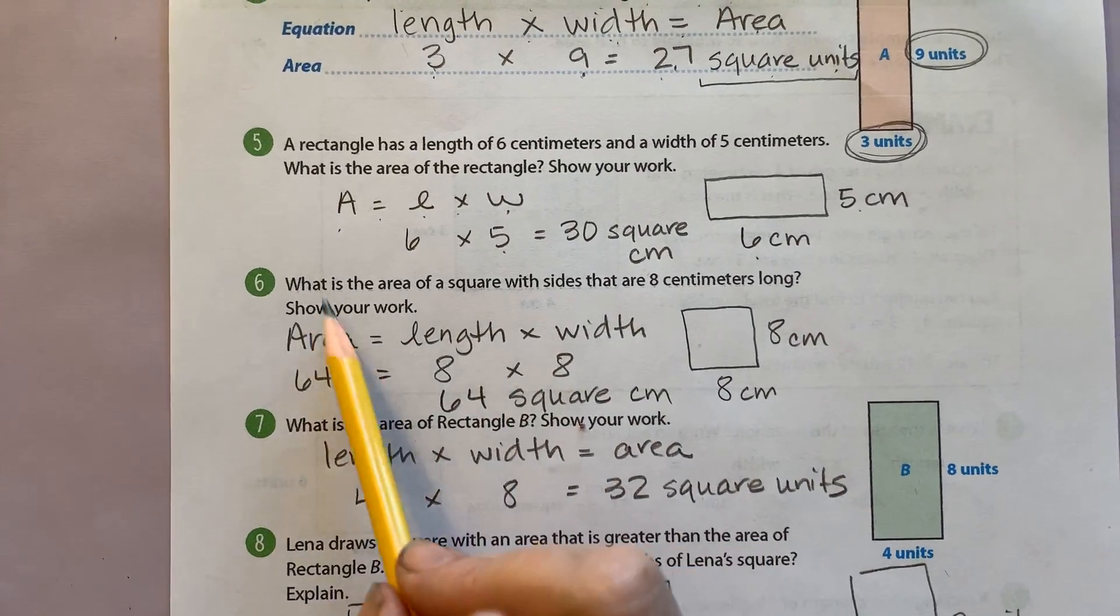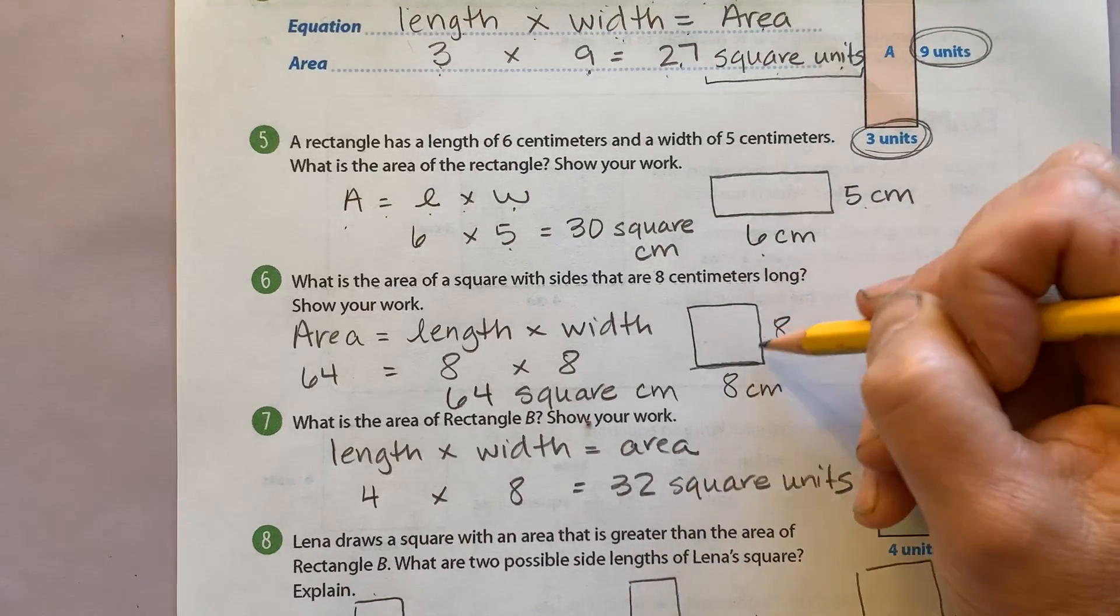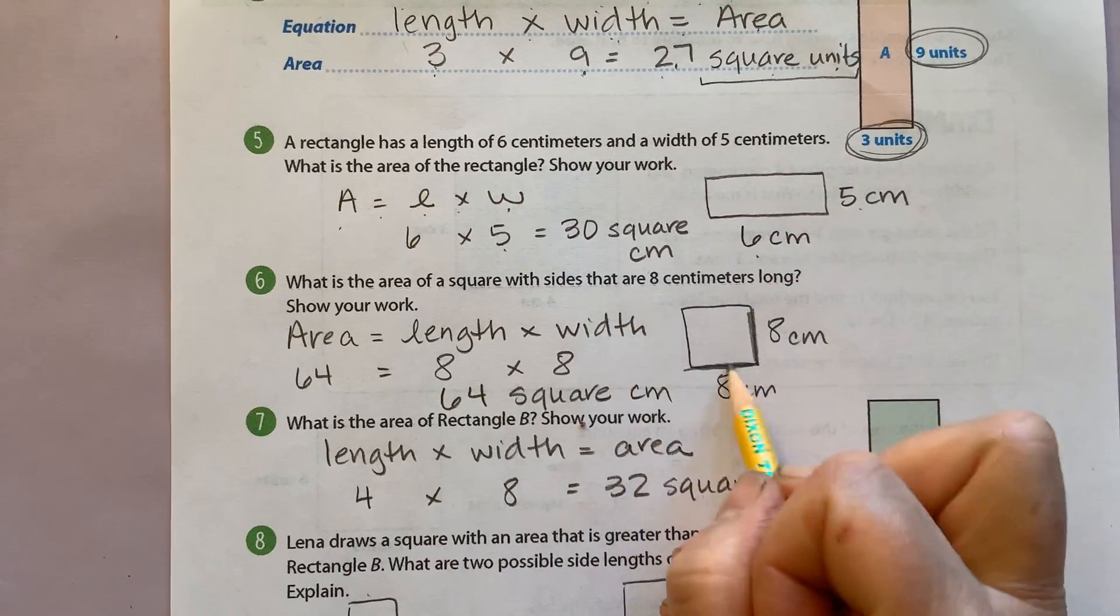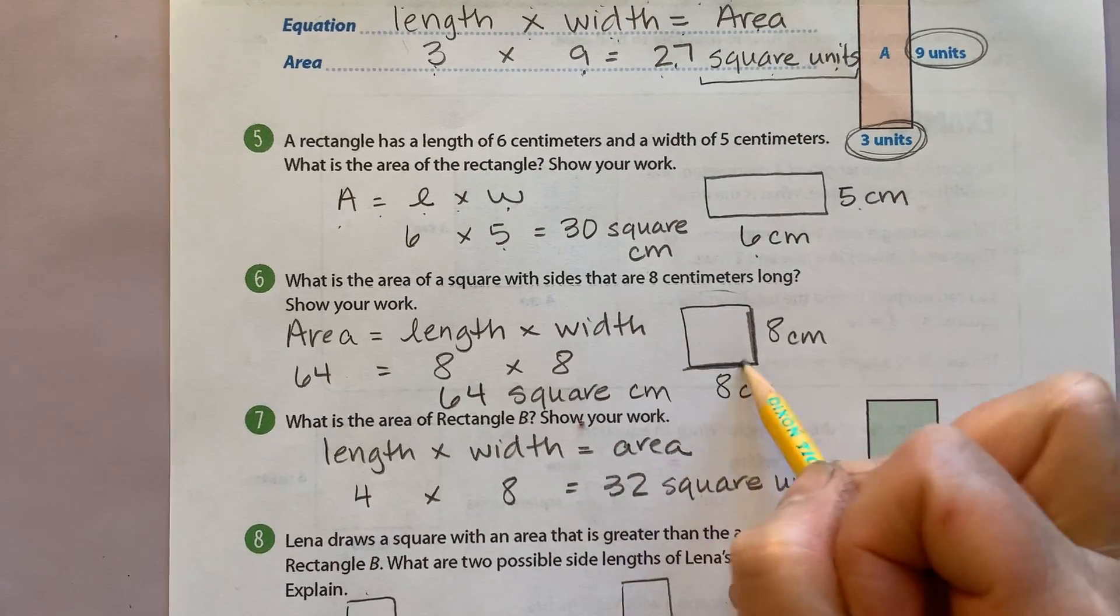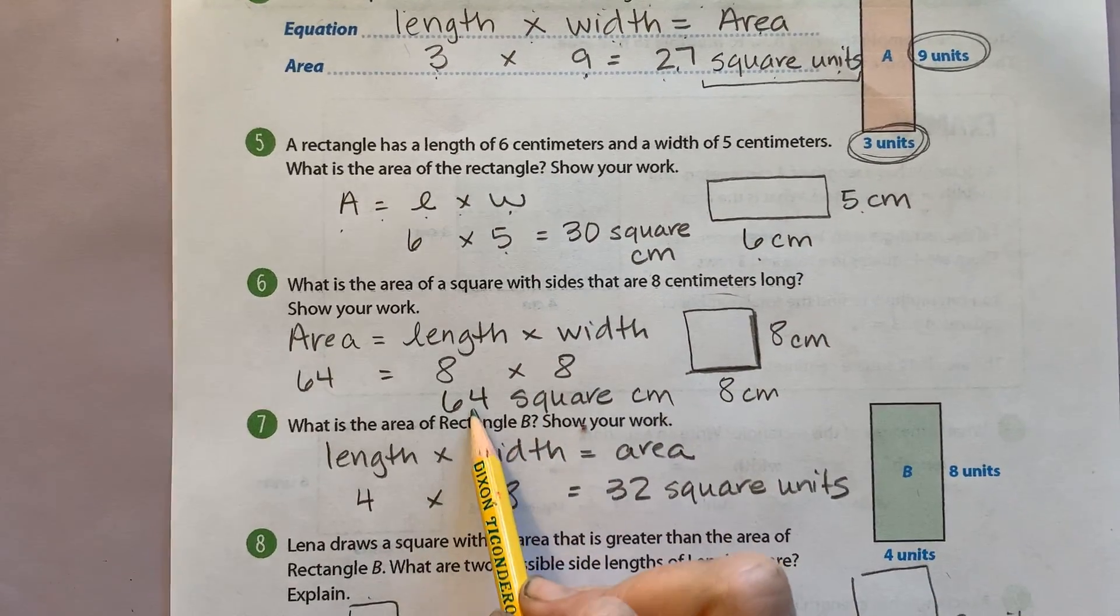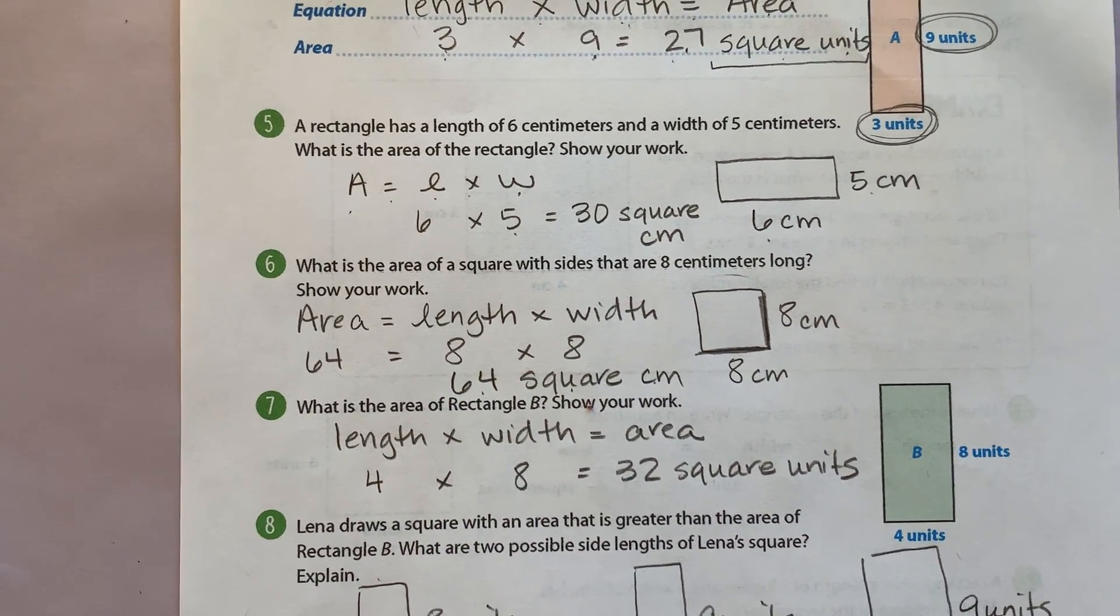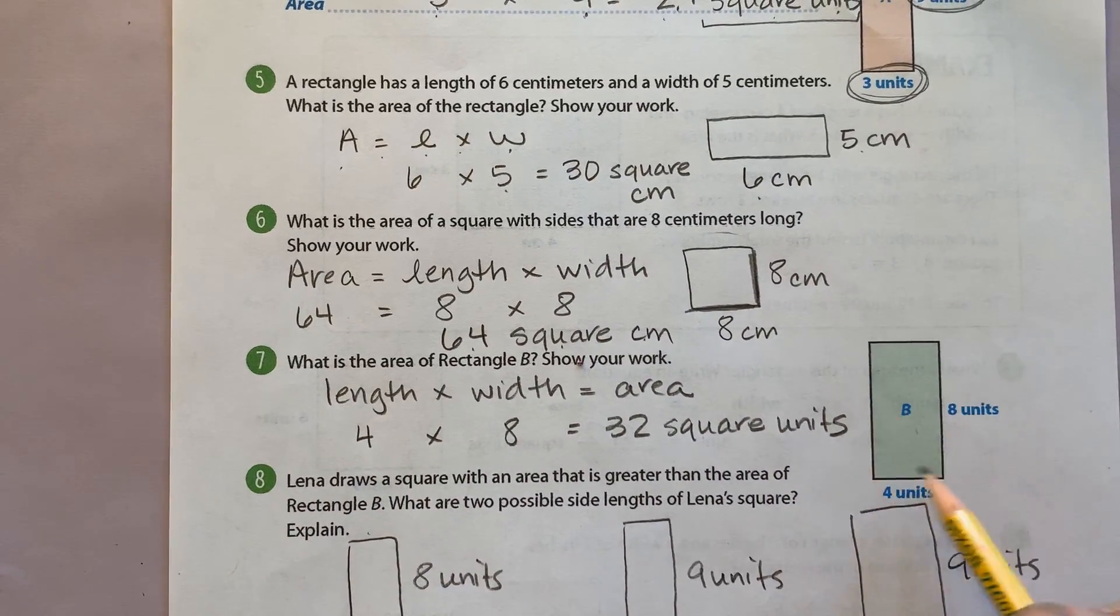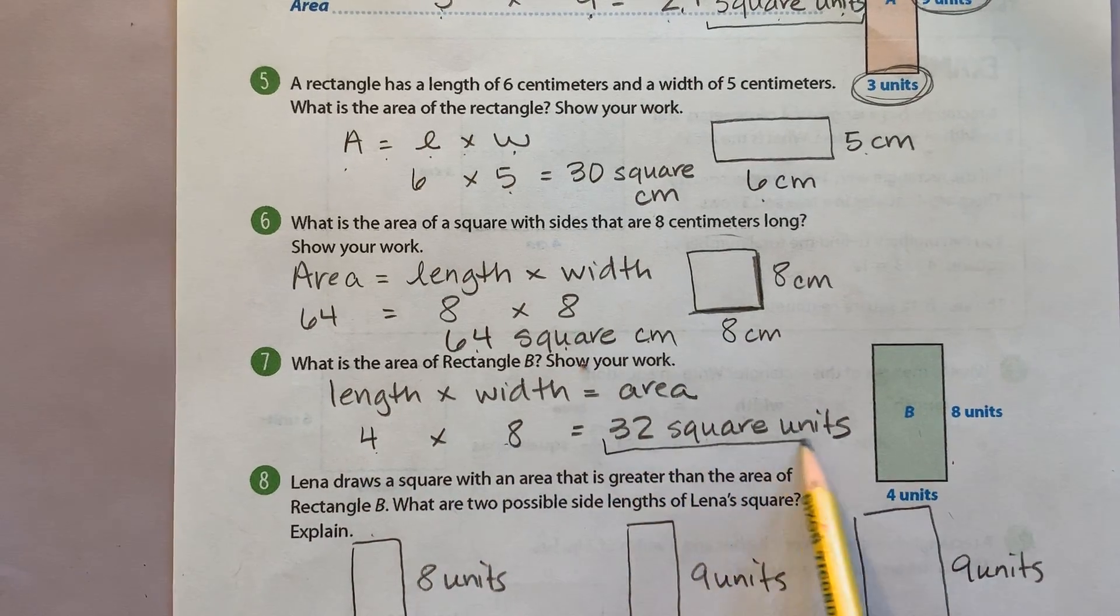Number six, the area of my square. Now remember, we had to remember that a square, the length is the same thing as the width. So since they tell me the side is 8, that means all four sides are the same. But we only need the length and the width to find area. And I found 64 square centimeters. If you need to, pause and write anything in that's missing. Same with number seven. I looked at my rectangle. I substituted my numbers in. And I got 32 square units.